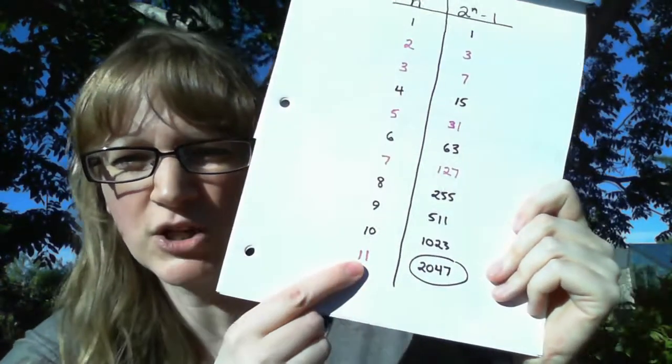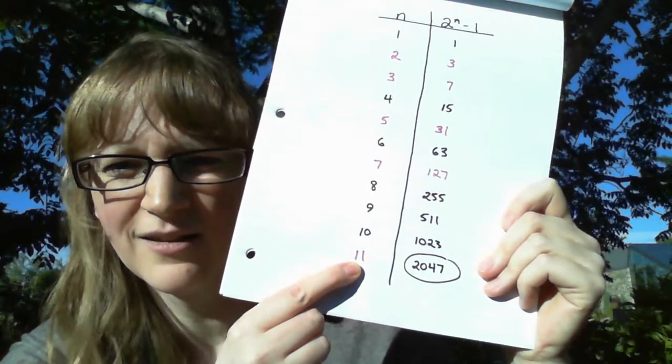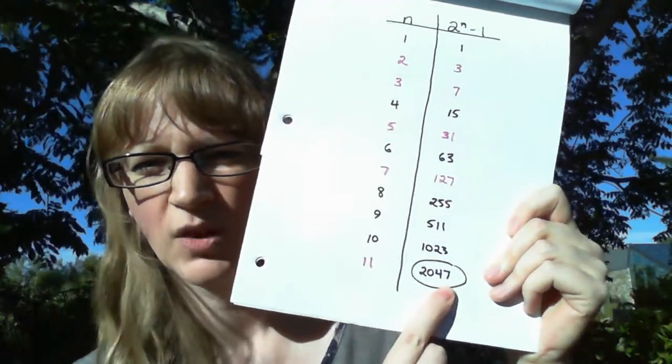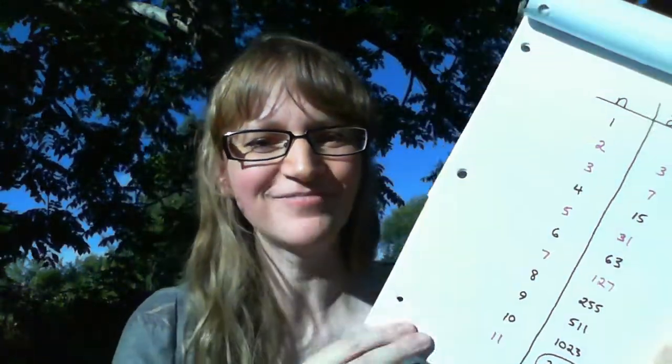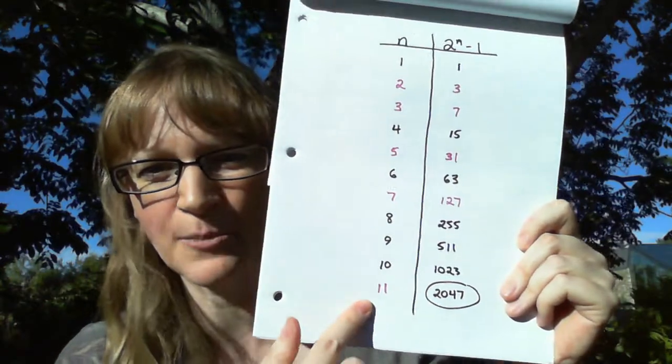Then we reached discovery. When n is 11, we get 2047, which is not prime. It's 23 times 89. So suddenly we had a break in our pattern.